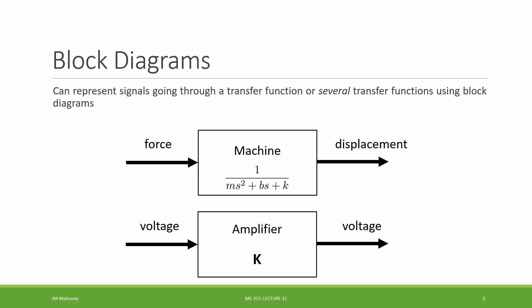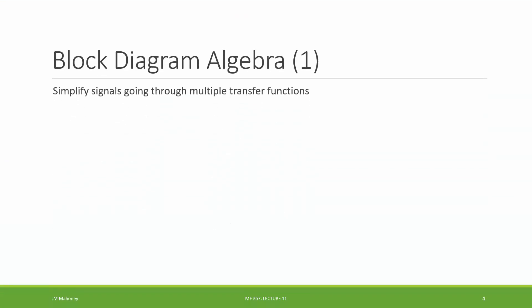As we get to more complex systems — and eventually in Unit 3 when we get into feedback systems — we're going to have signals going through multiple transfer functions. We'll be interested in what is going into our complex system and what is coming out, representing it as a net or effective transfer function. There are different ways that diagrams can be linked together in bigger systems.